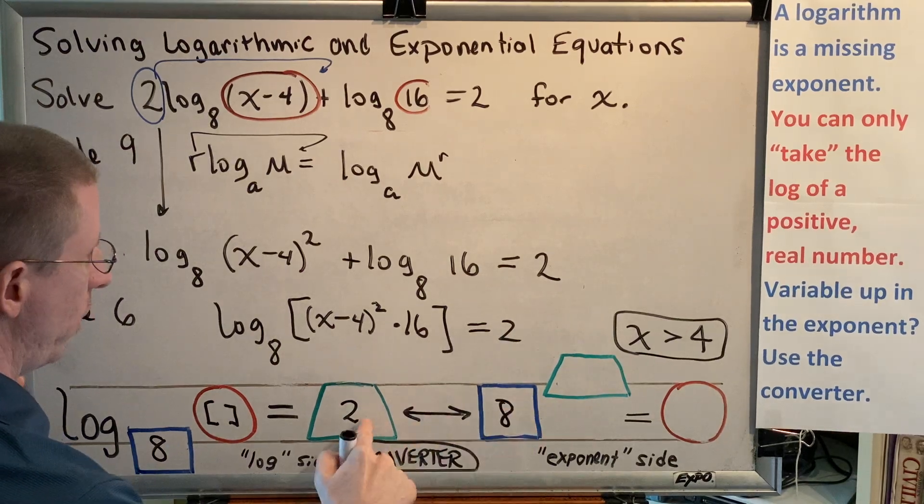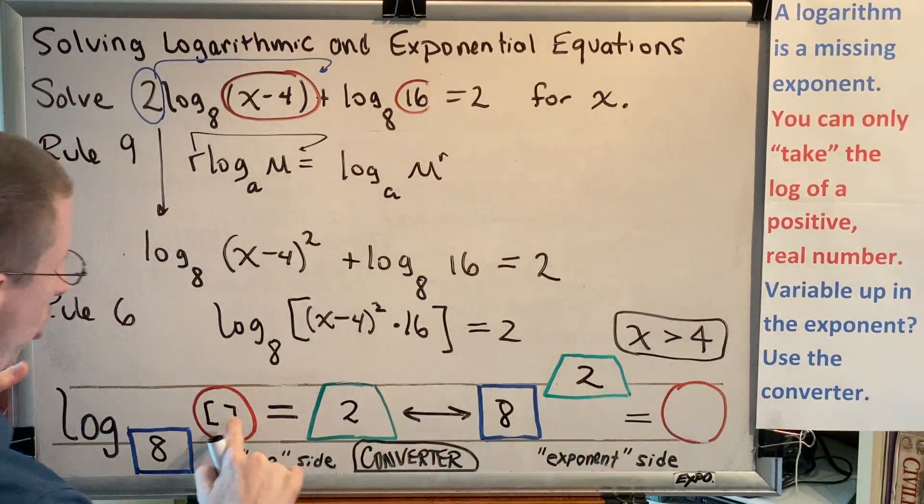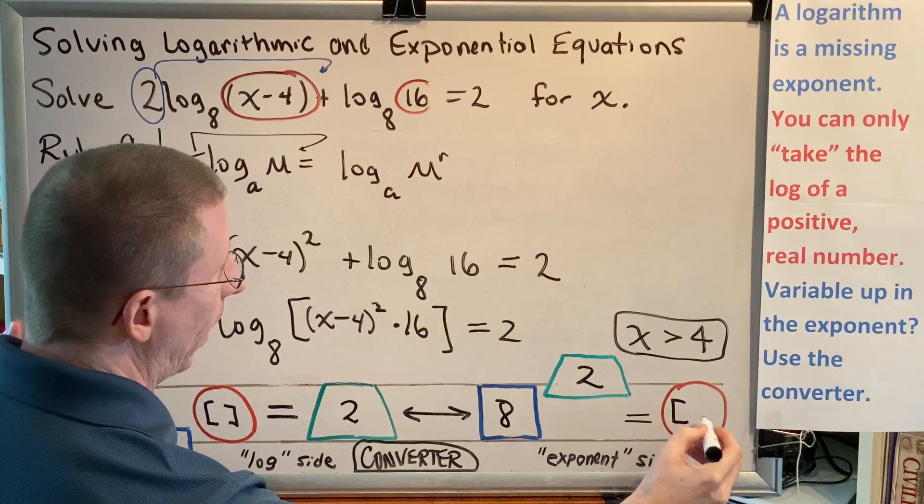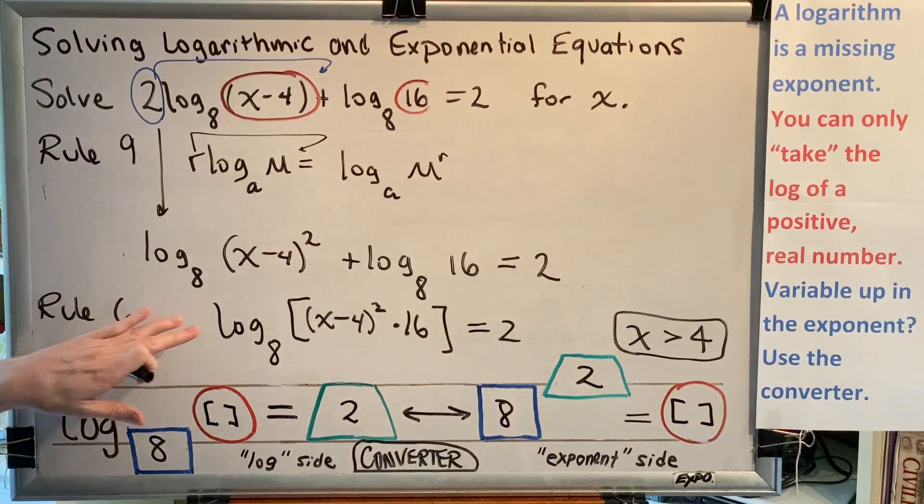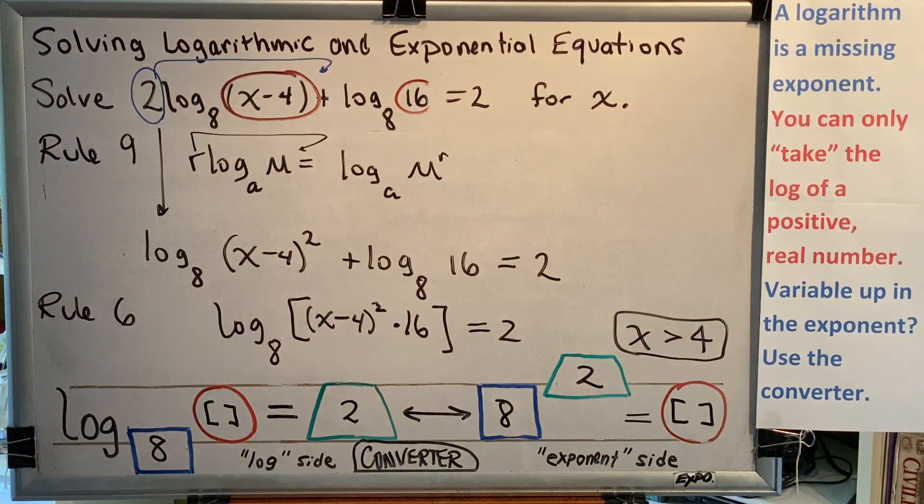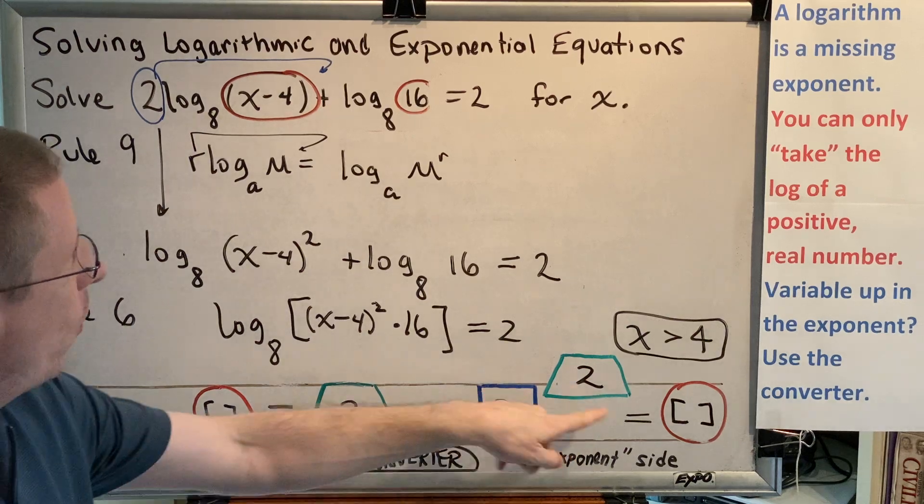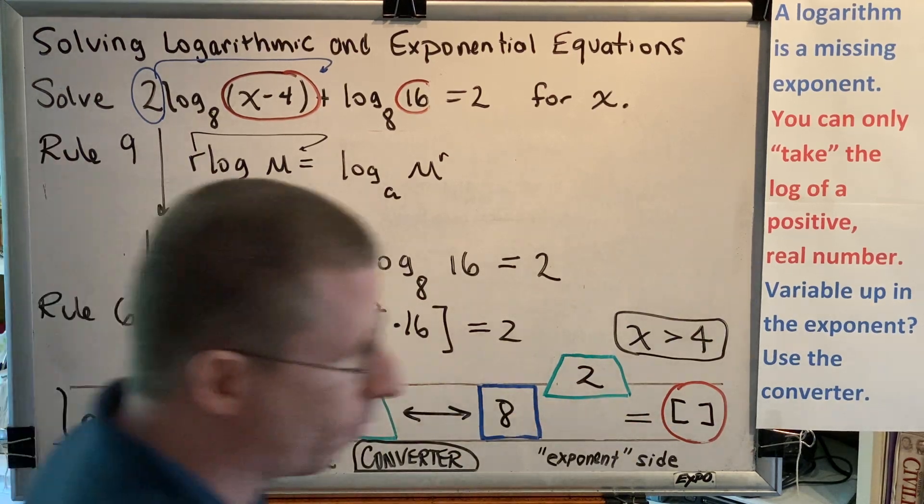Now match up the colors and shapes. Blue box gets an 8. Green trapezoid gets a 2. Red circle gets everything in the brackets. So we will rewrite this logarithmic equation in exponential form as 8 squared equals all that stuff in brackets.